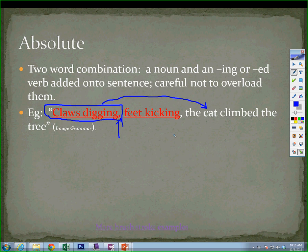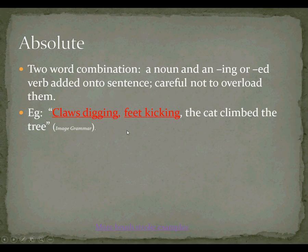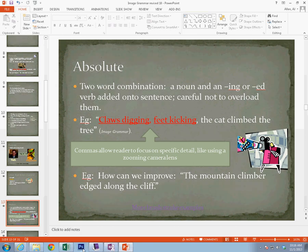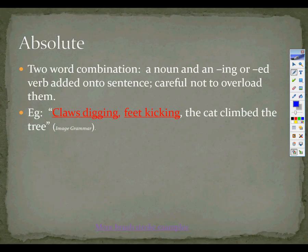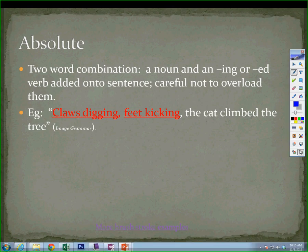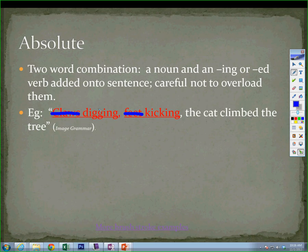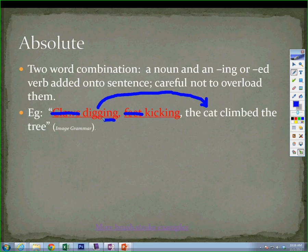Let's look at it another way. Let's pretend that instead of claws digging and feet kicking, the sentence starts out as simply digging and kicking. So digging is actually what brushstroke? Yes, a participle — because we see the -ing. It looks like a verb but it's acting like an adjective, and the adjective is modifying cat. So digging is a participle. What about kicking? Yes, that also is a participle modifying cat.